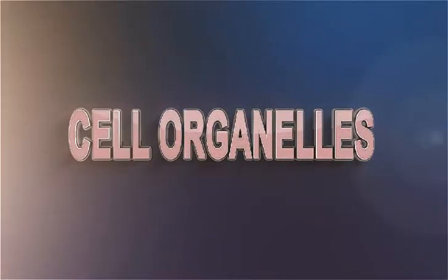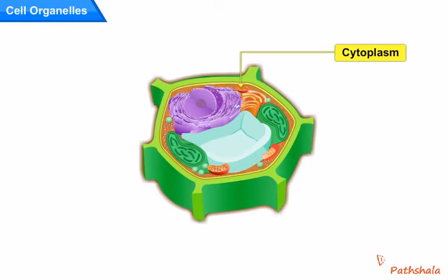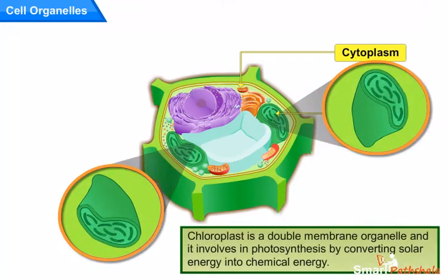Let us discuss about the various cell organelles present in the cytoplasm of the cell. Chloroplast is a double membranous organelle present in the cytoplasm of the cell and it involves in photosynthesis by converting solar energy into chemical energy.